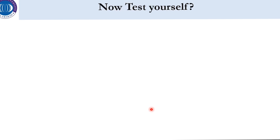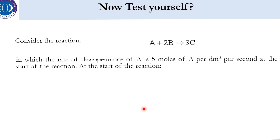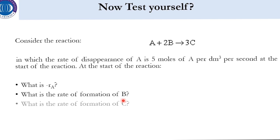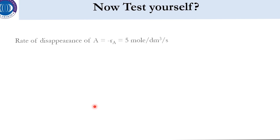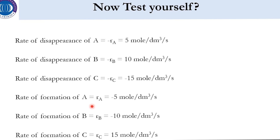For yourself, consider the reaction A + 2B → 3C, in which the rate of disappearance of A is 5 mol of A per dm³ per second at the start of the reaction. Answer the following: What is minus r_A? What is the rate of formation of B? What is the rate of formation of C? What is the rate of disappearance of C? What is the rate of formation of A? What is minus r_B? Pause, solve it, then resume to get the answers.